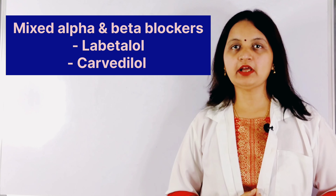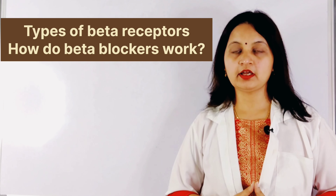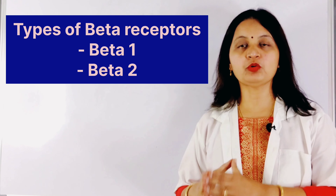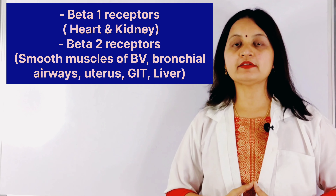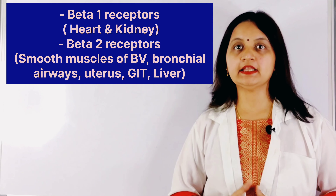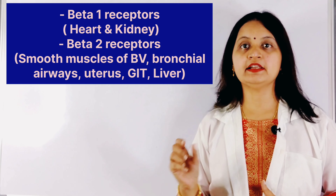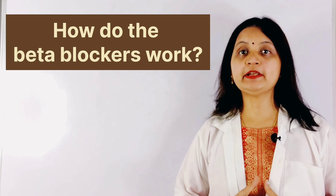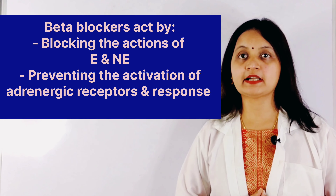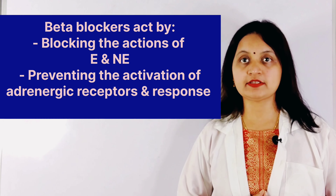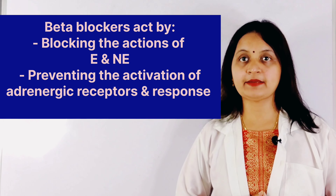Next, types of beta receptors and how do the beta blockers work? The beta receptors are mainly of two types: beta 1 receptors and beta 2 receptors. The beta 1 receptors are predominantly expressed in the heart and kidney, while beta 2 receptors are mostly present in the smooth muscles of the blood vessels, uterus, GI tract, and liver. The beta blockers work by blocking the actions of neurotransmitters — epinephrine and norepinephrine — preventing the stimulation of beta adrenergic receptors and blocking the actions of the receptors.